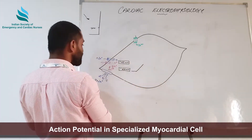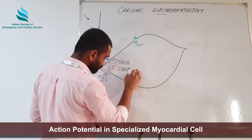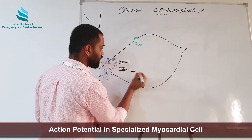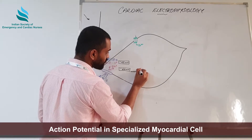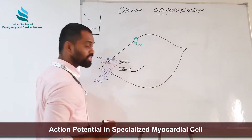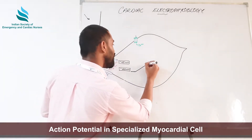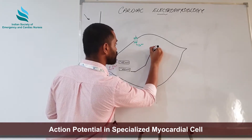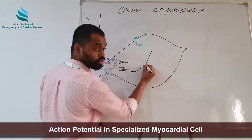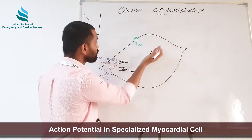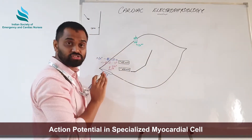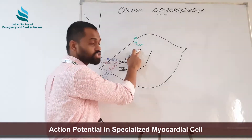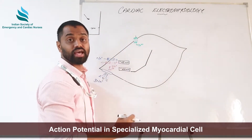The action potential in the SA node will not rise steeply all of a sudden; instead it has a slow, slopey progression. From the baseline resting membrane potential it slowly rose to minus 45 millivolts, touching threshold potential, and then the calcium channels open. Because of the calcium channels there is action potential, but it follows a sloppy course because they are slow channels, unlike sodium channels in contractile myocardium.